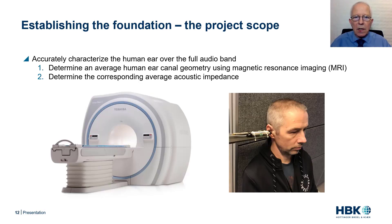A more realistic ear canal and acoustic impedance valid for the full-band application constituted the starting point for designing the next generation ear simulator. The two tasks that had to be resolved were to accurately characterize the human ear for the full audio band — by determining an average human ear canal geometry using magnetic resonance imaging, and by determining the corresponding average acoustic impedance for the adult human ear. How this would be accomplished in an extensive research project is described in the following.